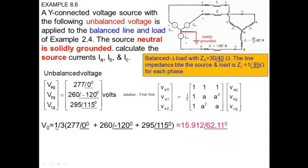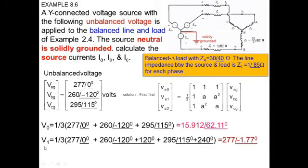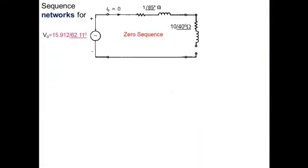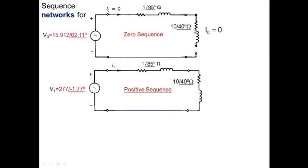We will obtain the zero sequence voltage, the positive sequence voltage as one-third times the operator A matrix times the phase voltages, and similarly the negative sequence voltages. To derive the equation for the sequence network: for the zero sequence, the current is zero and the load is open. For the positive sequence, the current I1 equals voltage divided by the line impedance plus load impedance.